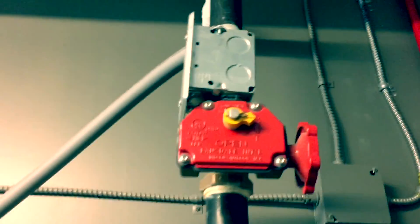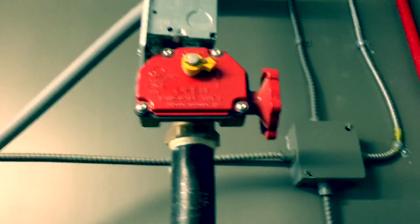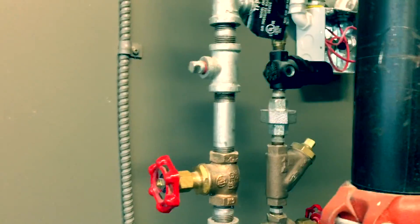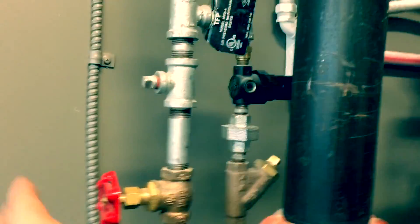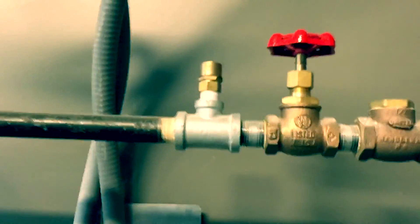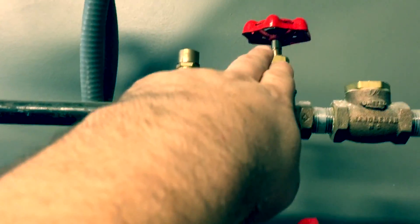Priming line shut off, isolation valve closed there. There's our quick fill line shut, air maintenance device bypass is closed. You can close it out if you want, doesn't really matter and keep it open.